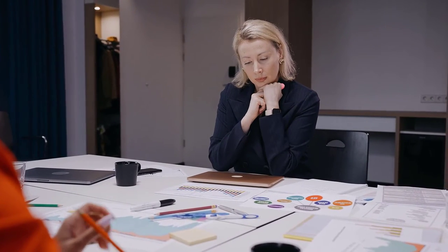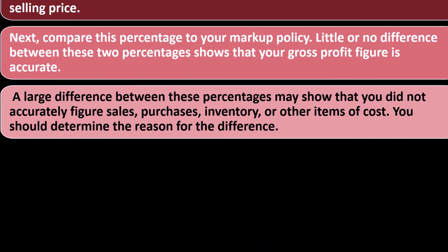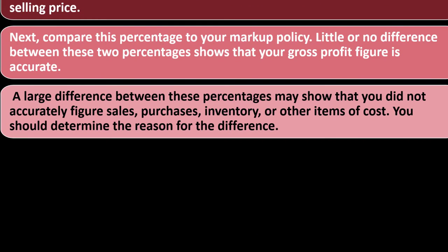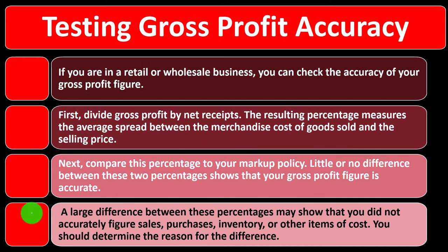You can also think of it this way: if someone like an auditor were reviewing your financial statements, they may use a technique like this as well. If there's a big difference, you would want to be able to explain why. A large difference between these percentages may show that you did not accurately figure sales, purchases, inventory, or other items of cost. You should determine the reasons for the difference.